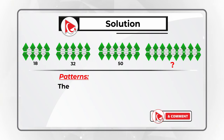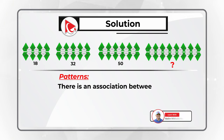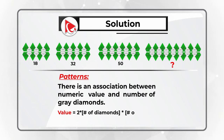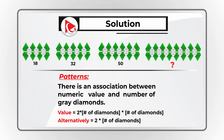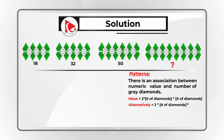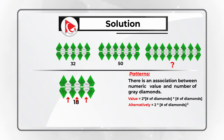The pattern here represents an association between the numeric value under the diamond group and the number of gray diamonds. The value can be calculated as two multiplied by the square of the number of diamonds. For example, the first diamond group has three gray diamonds: 2 multiplied by 3 times 3 equals 2 multiplied by 9, which equals 18.